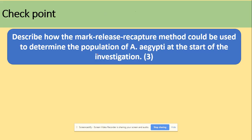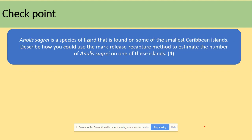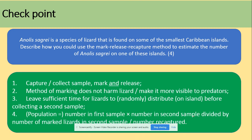For exam questions on mark-release-recapture: describe the method to determine population size. Key words to include are capture, mark, and release — all three earn a mark. Leave sufficient time for animals to return to their habitat before the second sample. Giving the equation always earns a mark. For a four-mark question, the marks come from: capture, mark, release, the equation, leaving sufficient time, and extending to details of the first marking.